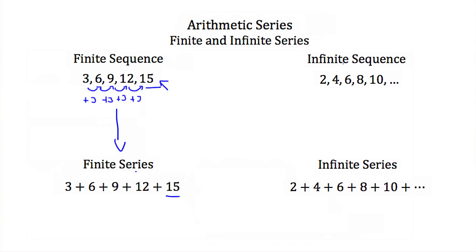An infinite sequence and an infinite series are denoted by three periods at the end. Here our sequence is 2, 4, 6, 8, and 10. But the fact that we have these three periods at the end means that this sequence goes on forever. There's another term after the 10 that's just not listed. This sequence goes on to 12, 14, 16, 18, and it keeps going up by the same amount until you reach infinity.